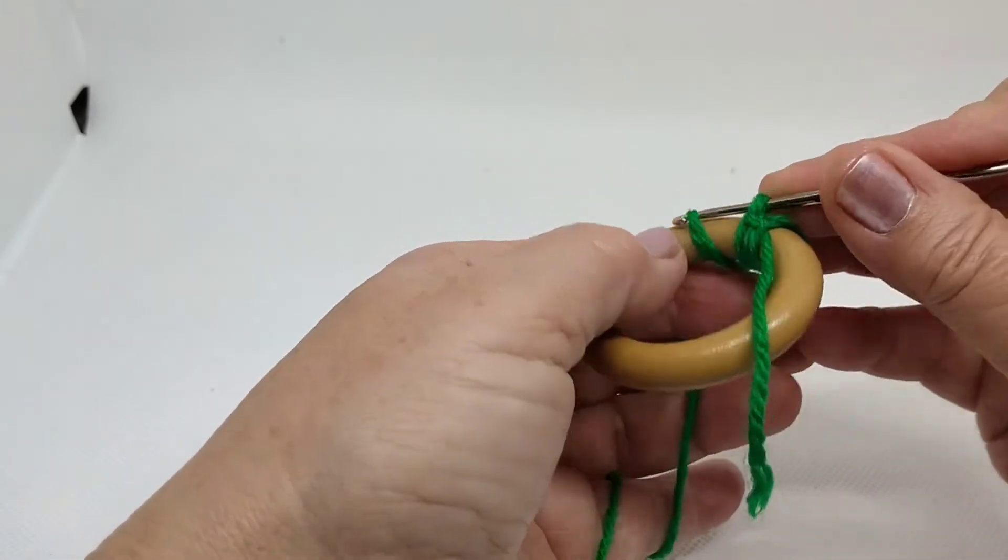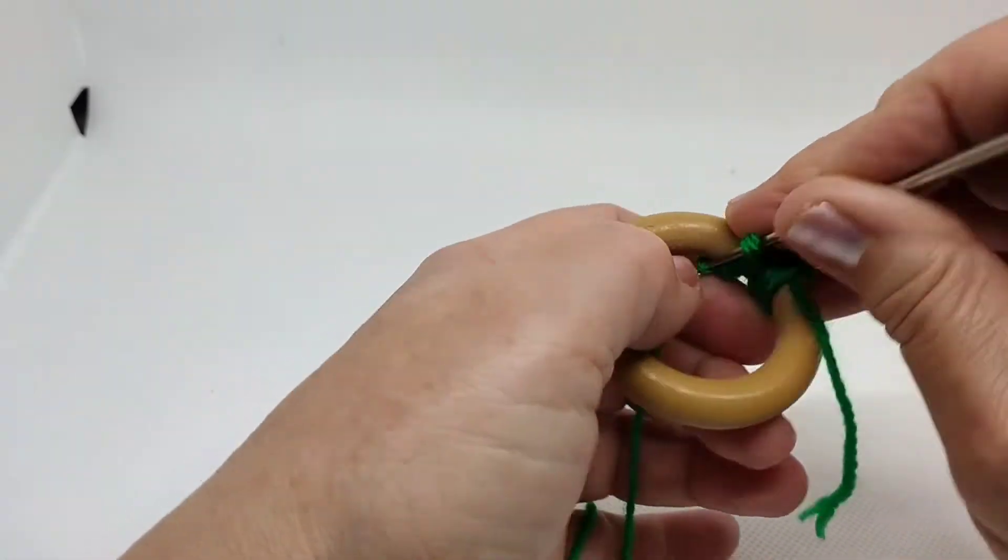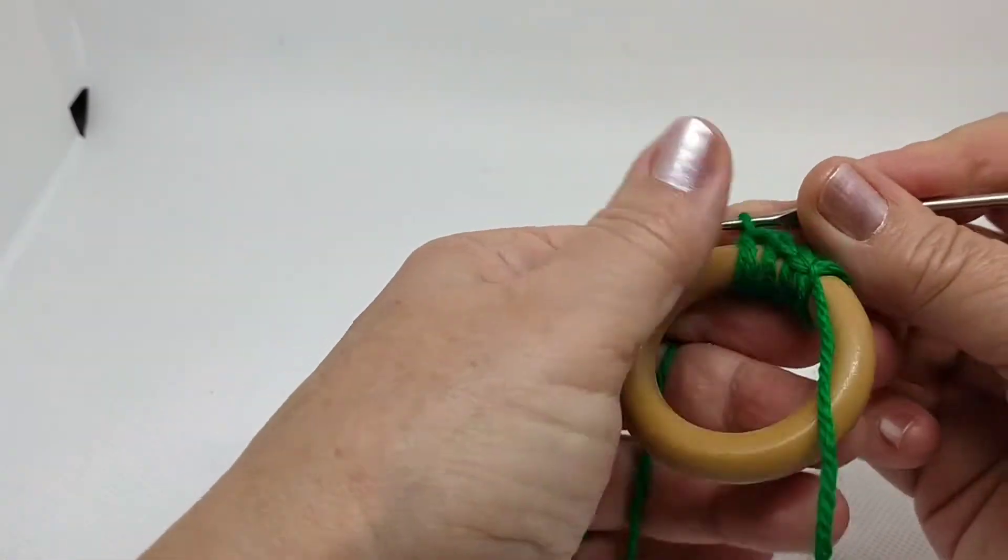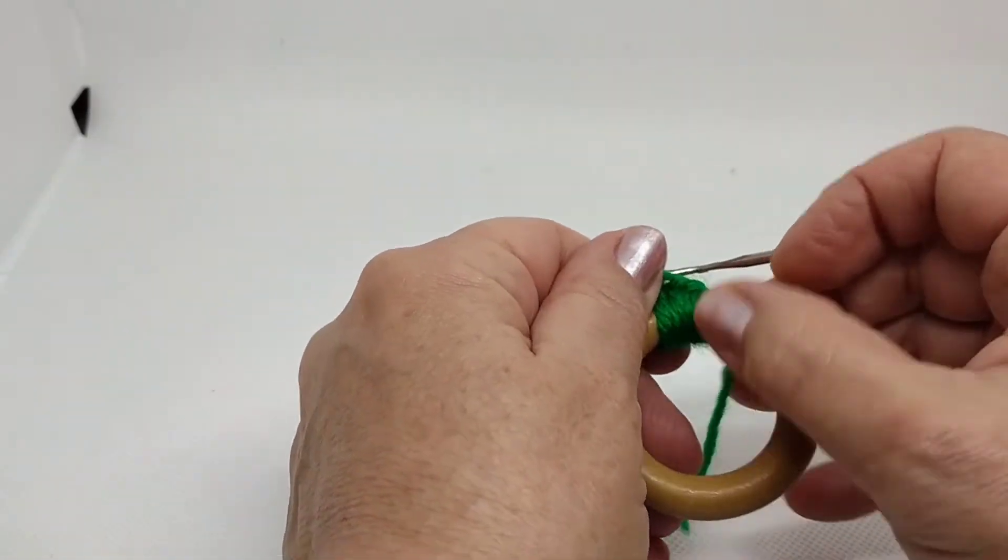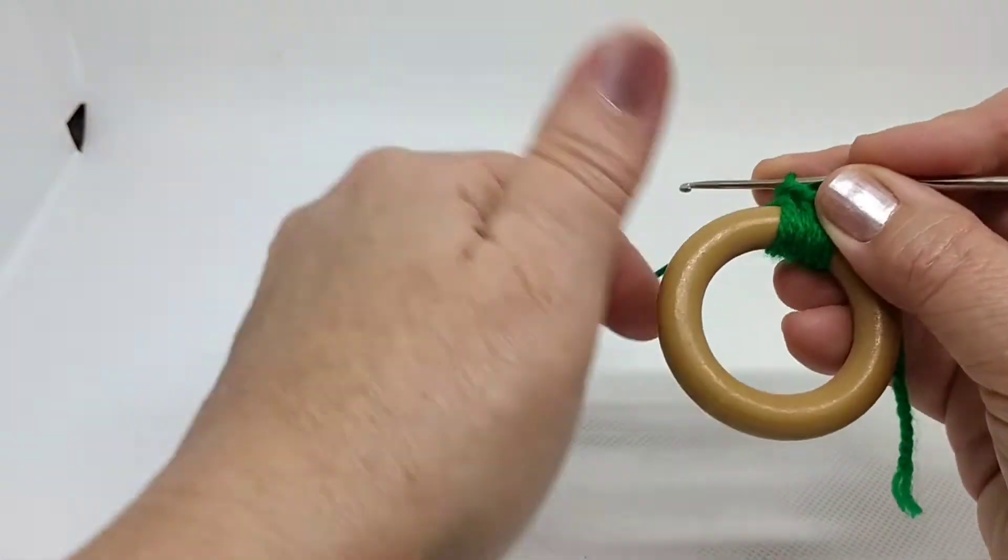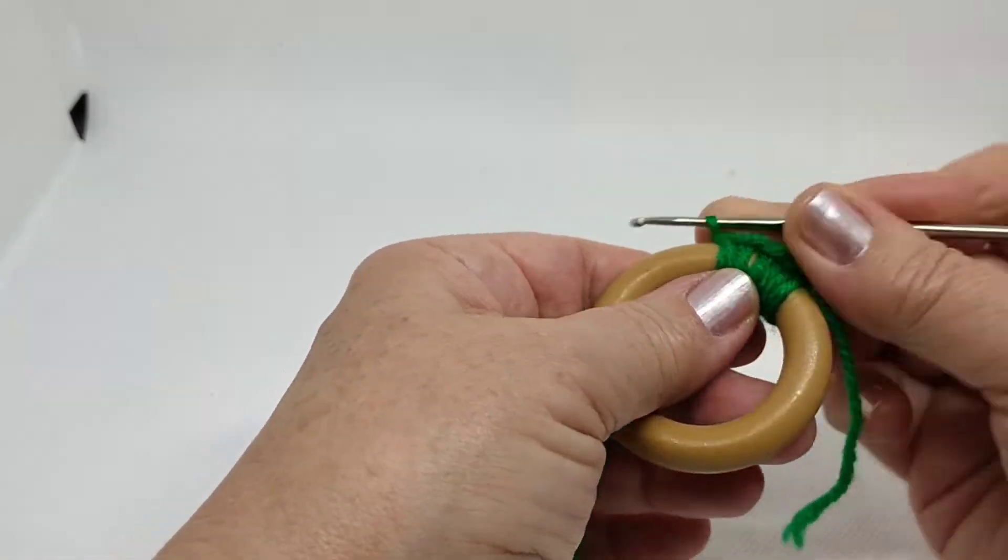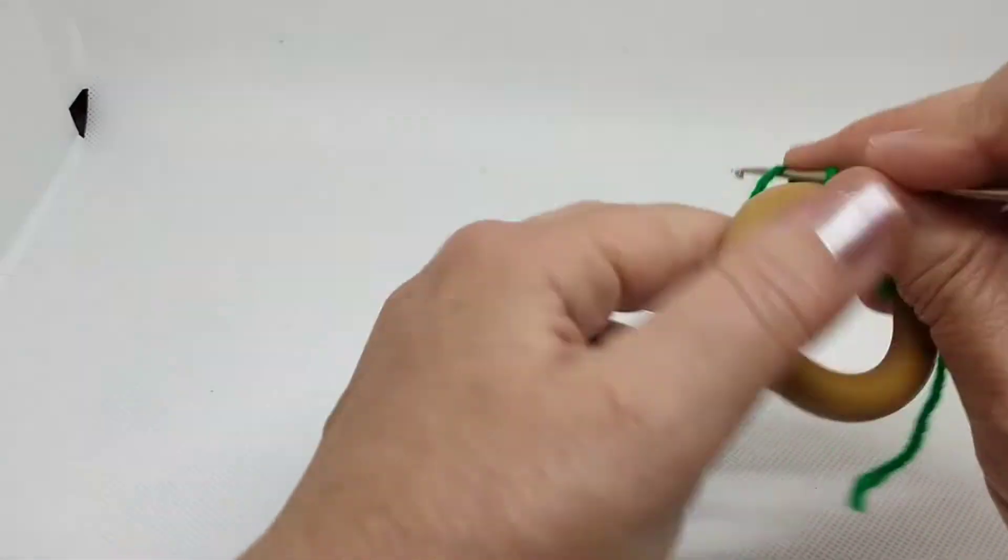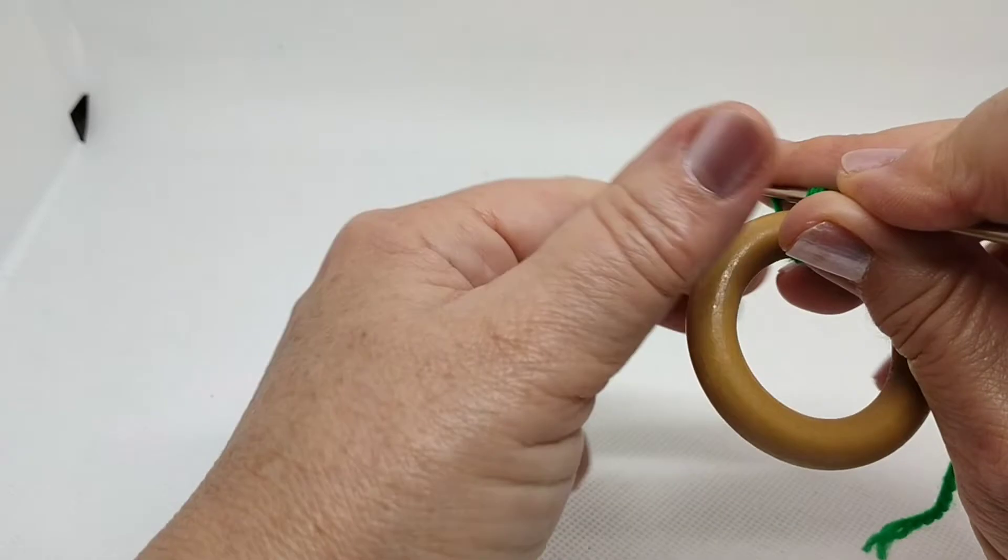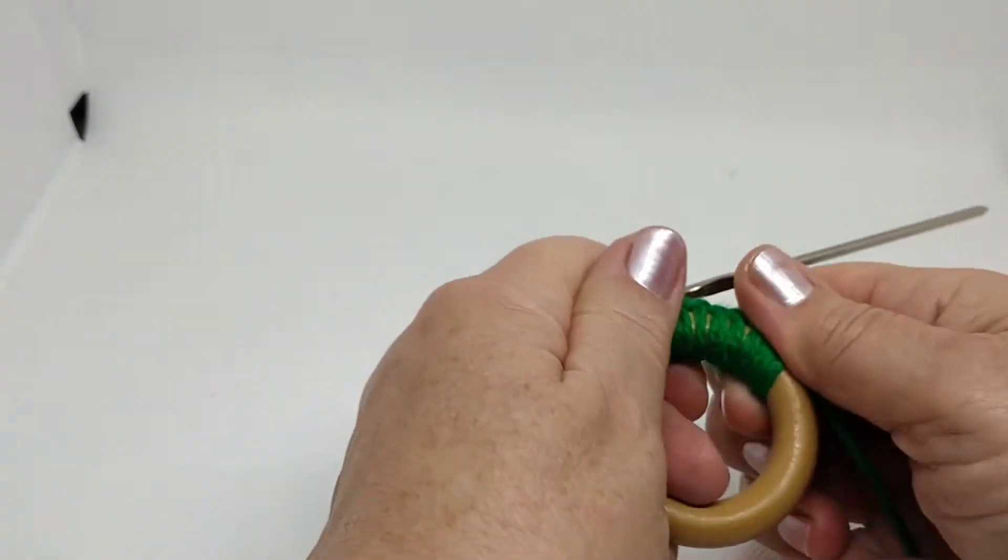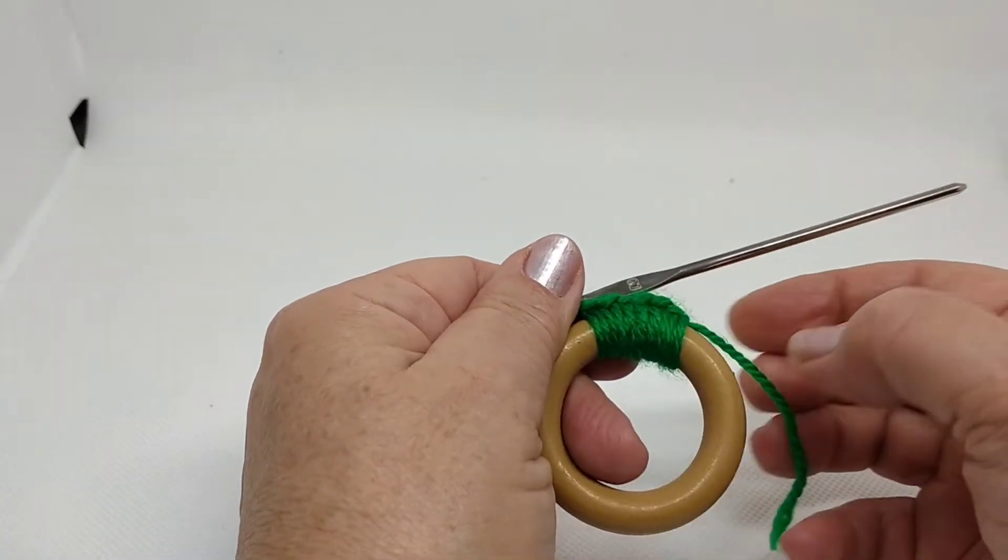Traemos la hebra, enganchamos y hacemos cadeneta. Volvemos a hacerlo, enganchamos, hacemos cadeneta, así lo vamos a hacer a todo alrededor de nuestra anilla. Que queden bien juntas todas las hebras. Ese es el motivo por el que he escogido la lana, porque la lana cubre un poquito más que el hilo de algodón.